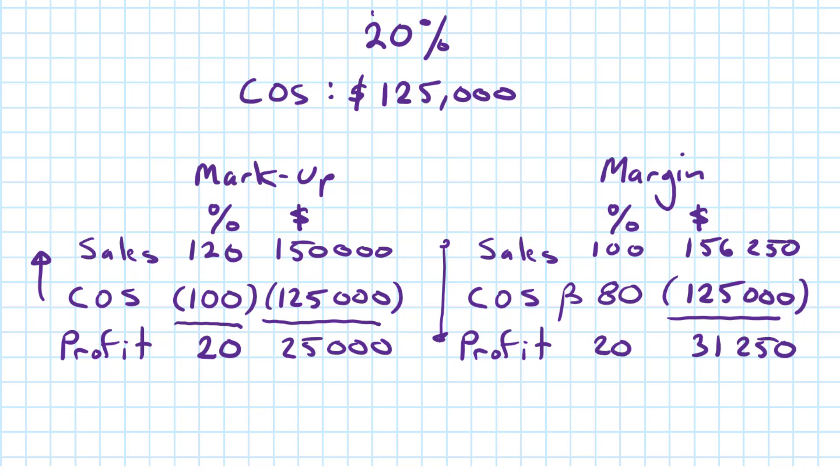That is the essential difference between a markup and a profit margin. Under markup, we start at cost of sales and go up, adding that markup. And under margin, we start at the sales with the 100%, and then the margin will be this bottom line here.